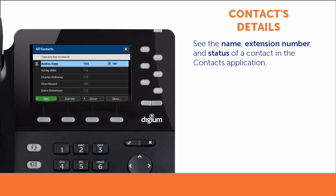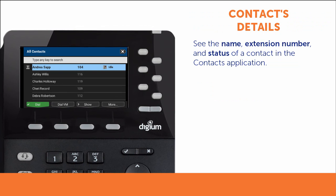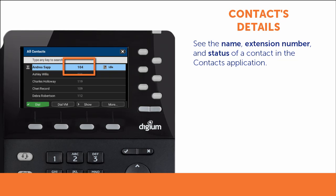From the Contacts list, you can easily see the status of an individual contact, their name and extension number, and whether that contact is on a call.